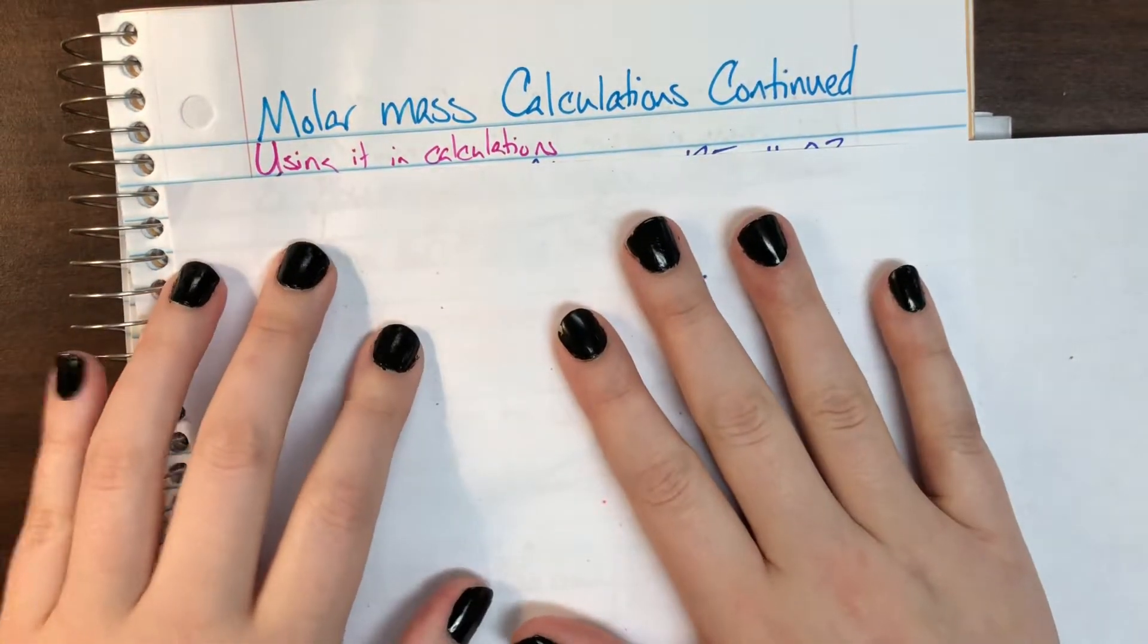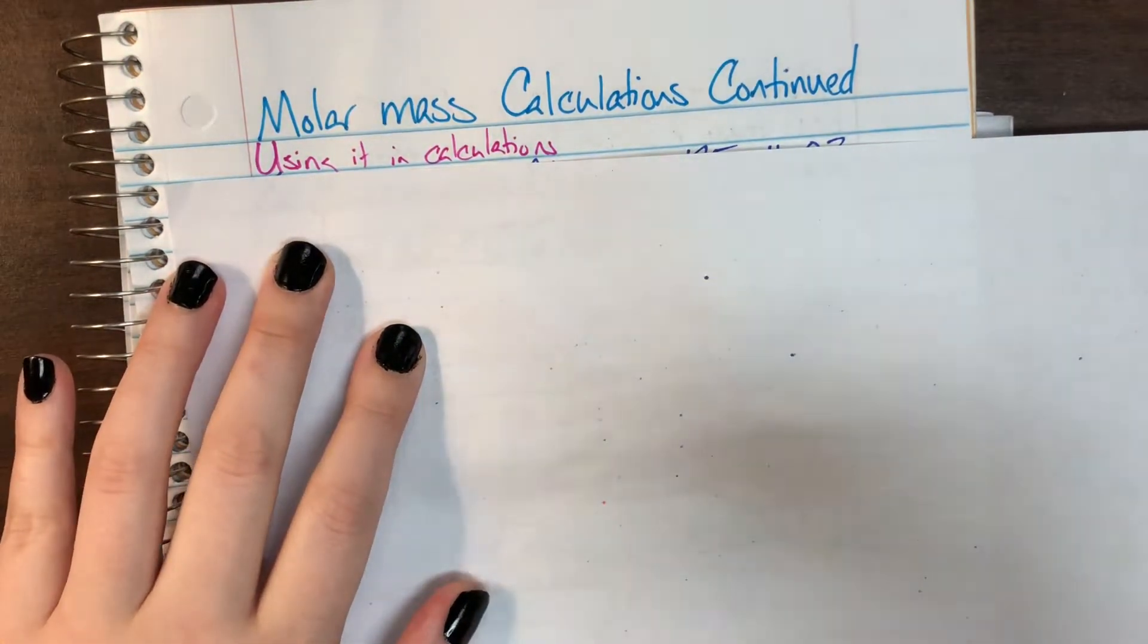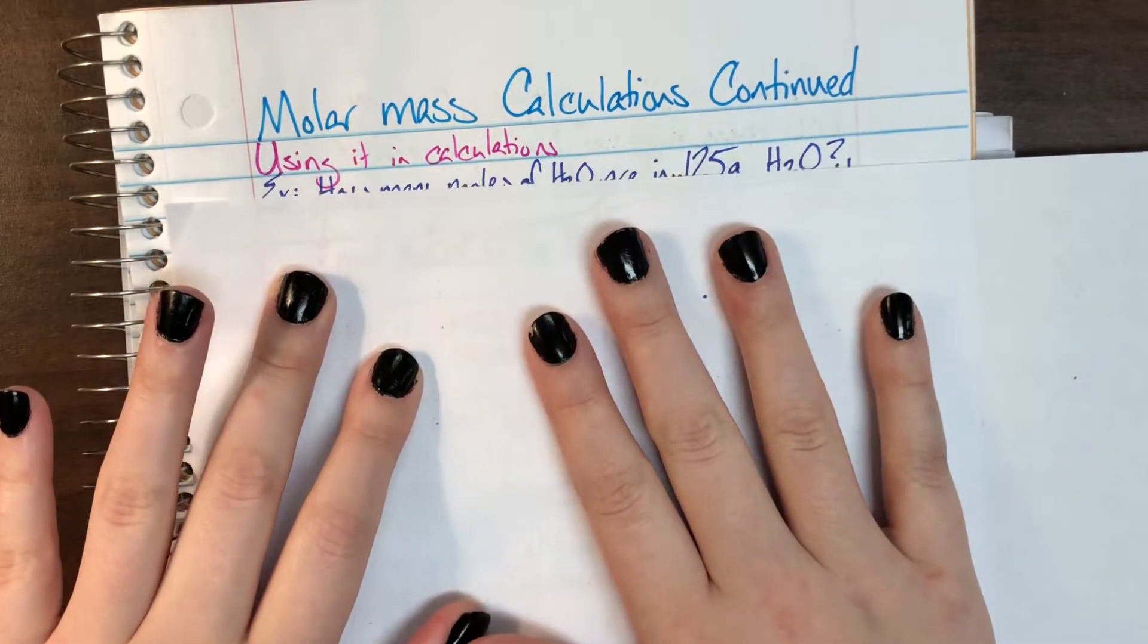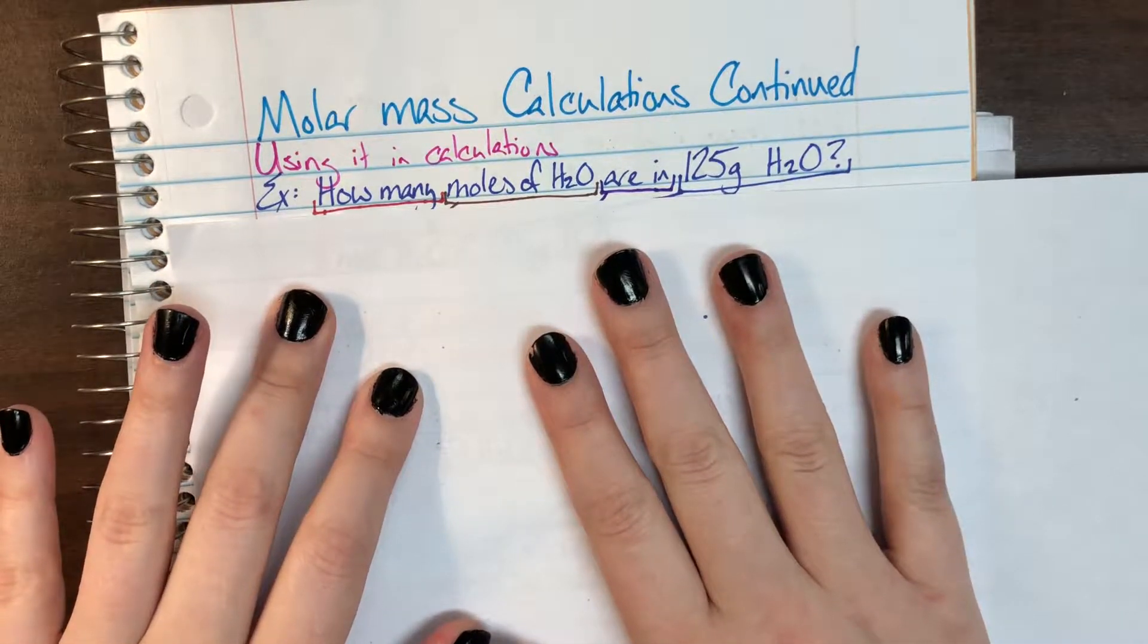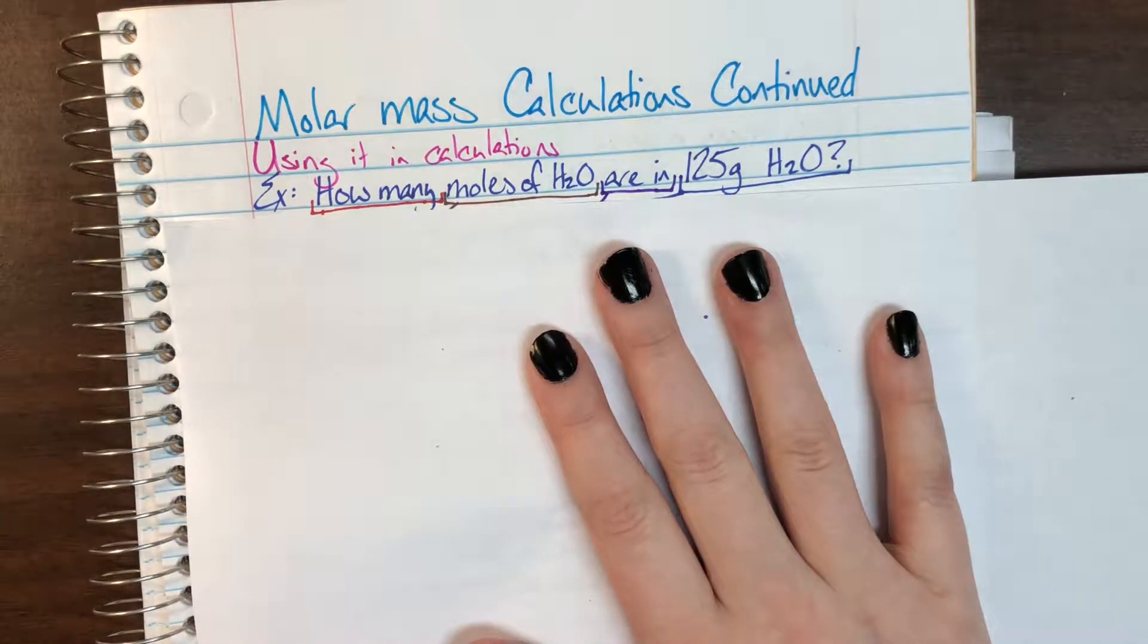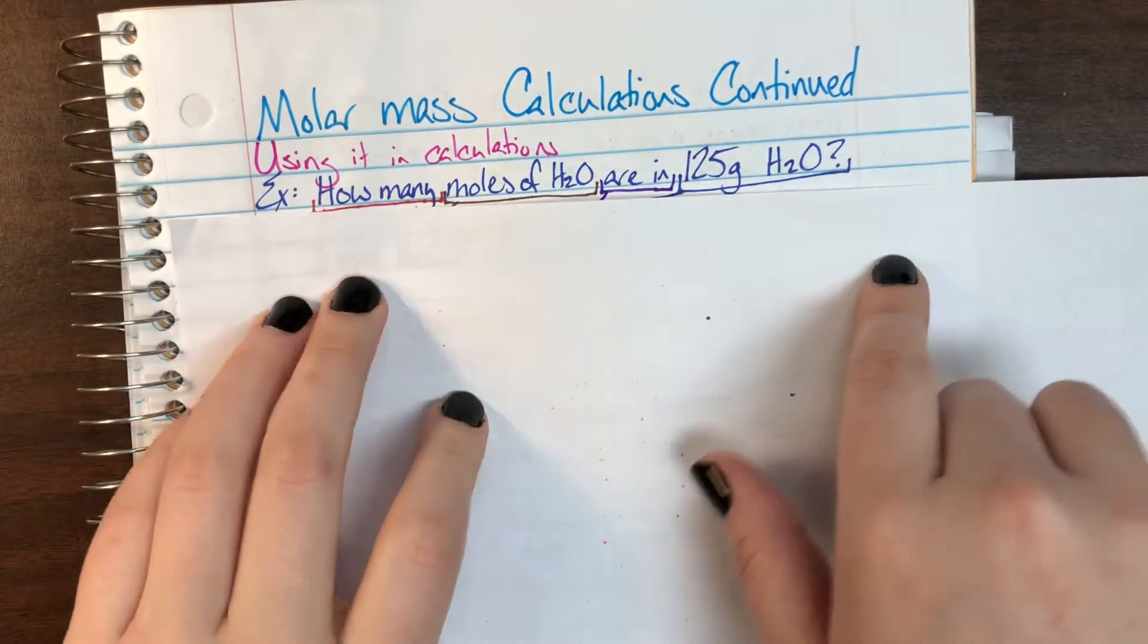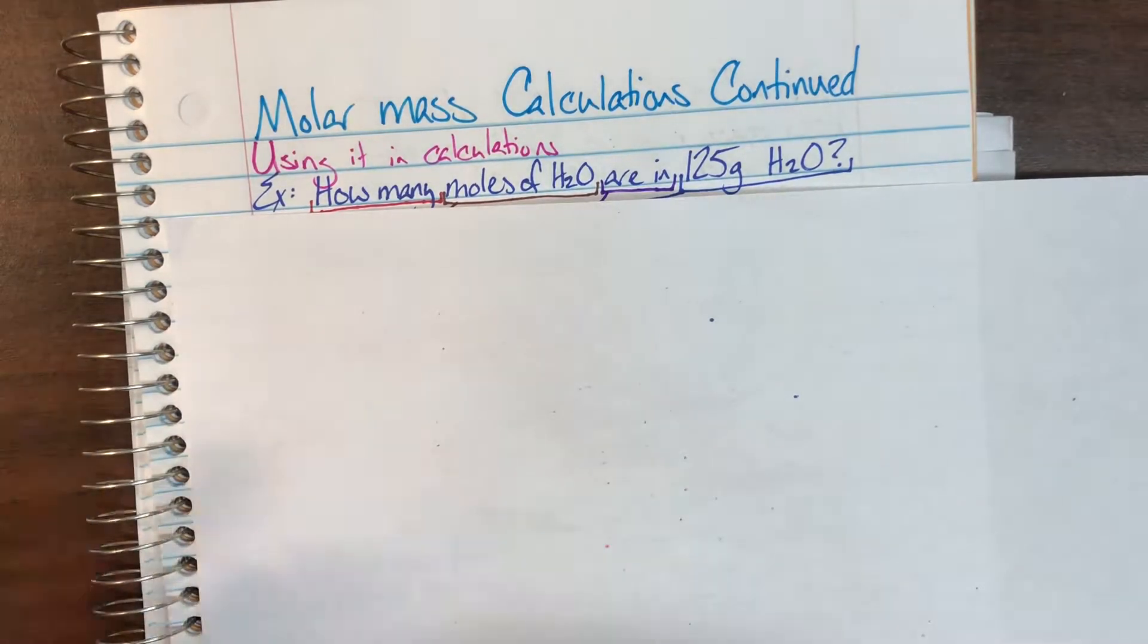The easiest way for us to do that is just to go ahead and look at a problem that we could see for molar mass and using it in a natural calculation. So here we have an example problem. It says how many moles of H2O are in 125 grams of H2O. Now this problem is in English. It's written out, but if we're going to calculate something, we need it to not be in English. We need it to be in math.